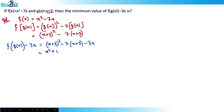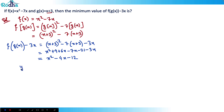Solving this: x² plus 9 plus 6x minus 7x minus 21 minus 3x. Combining x terms: 6x minus 7x minus 3x equals minus 4x. Constants: 9 minus 21 equals minus 12. So let's write this whole thing as y, where y equals x² minus 4x minus 12, and I want to find the minimum value of y.